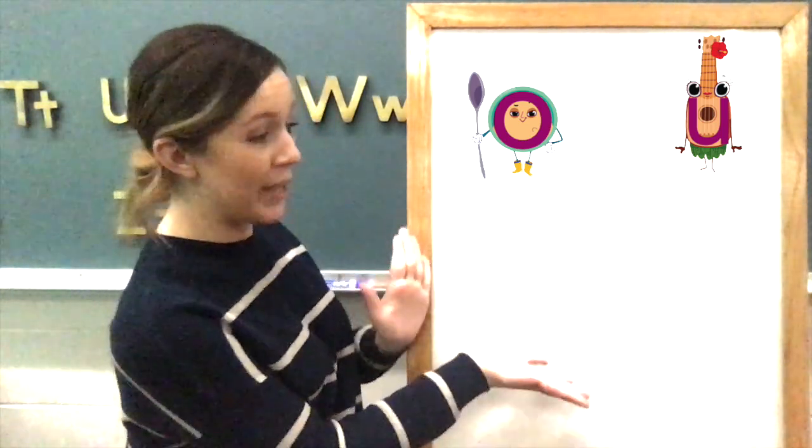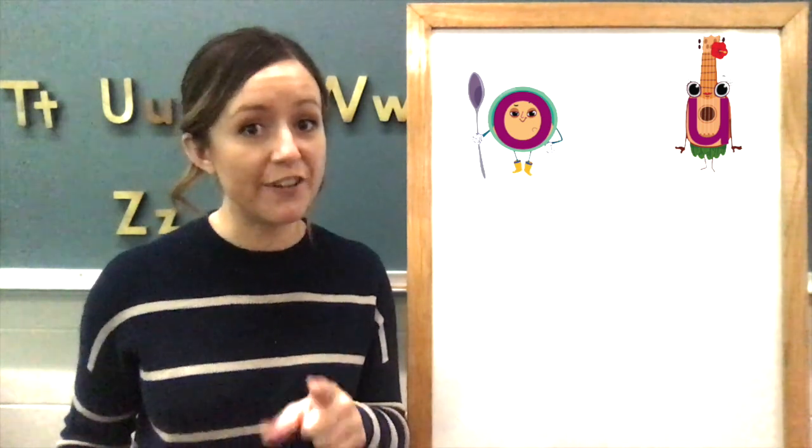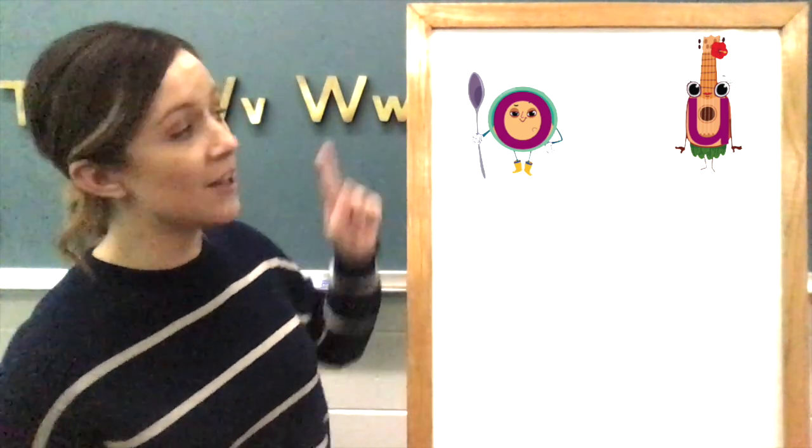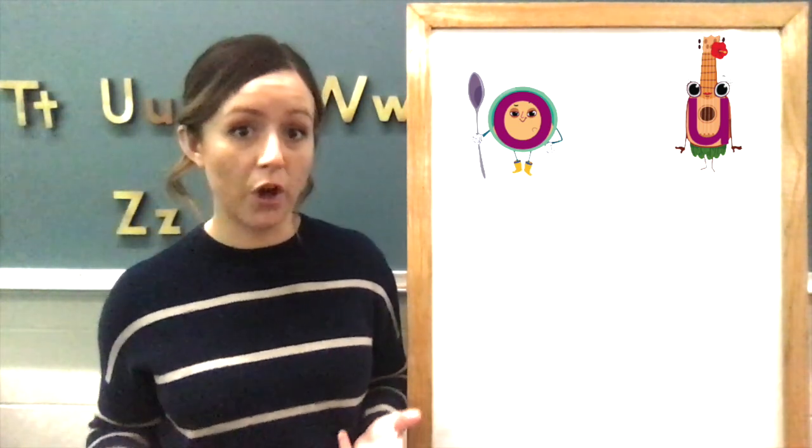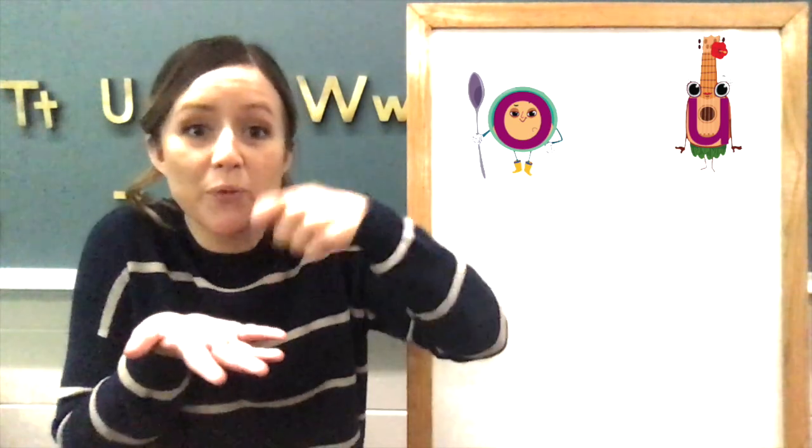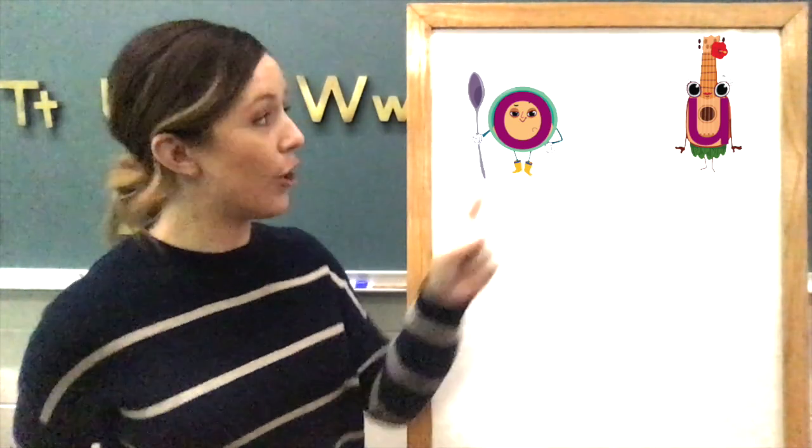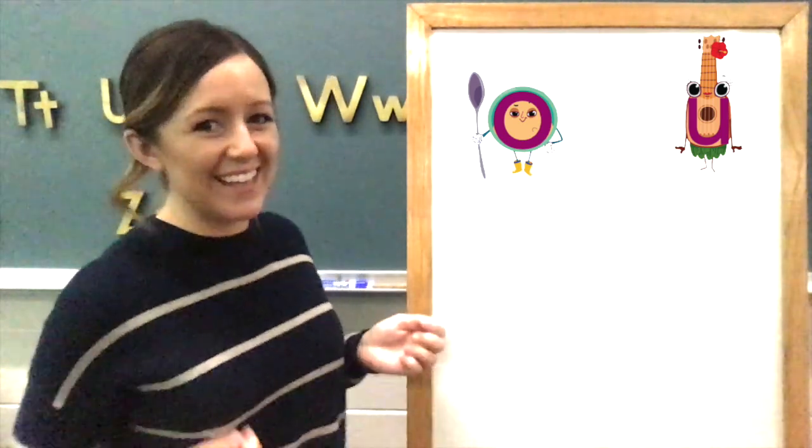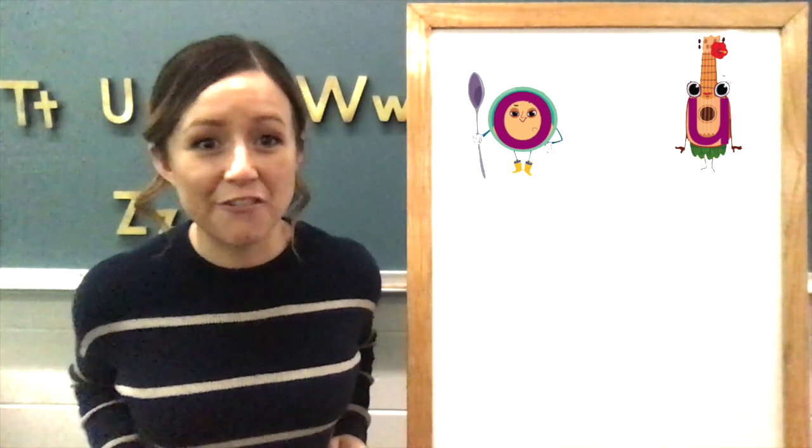We're going to see some pictures of words. When the picture comes up, you need to figure out if that word has a long O like Otis or a long U like Yuca. If the word has a long O like Otis, you're going to pretend you're eating oatmeal. If it has a long U like Yuca, you can play the ukulele. Got it? Alright, let's see our first word.